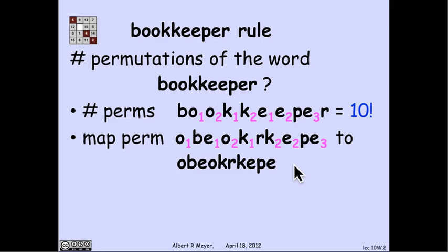If I want to count the number of unsubscripted permutations, then I simply figure out that this mapping is k to 1, and I'm going to then divide by k. Well, how many to 1 is it? How many subscripted words map to this given pattern? The answer is the subscripts on the o's don't matter, so there's two possible orders in which those subscripts might appear. Subscripts on the k's don't matter. There's two possible orders in which those subscripts might appear.